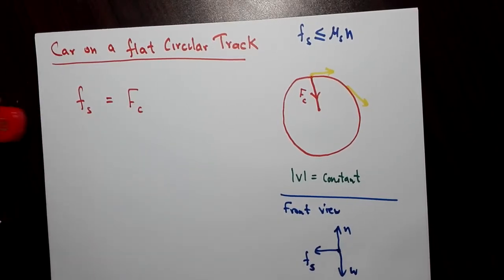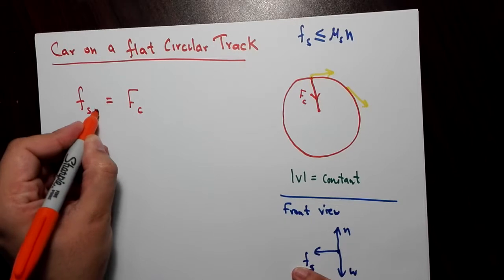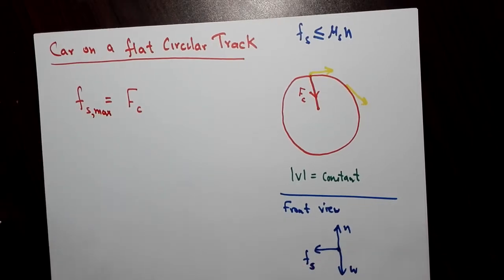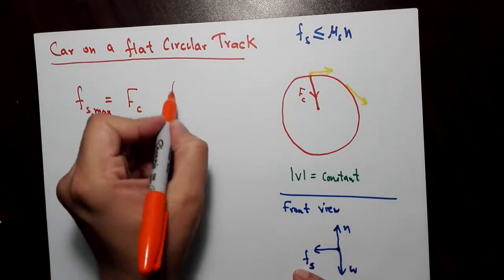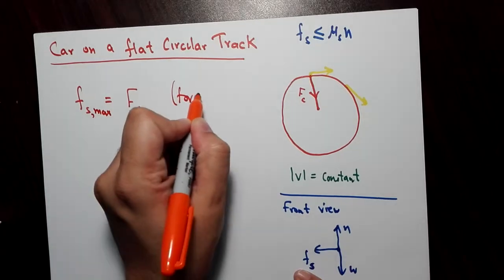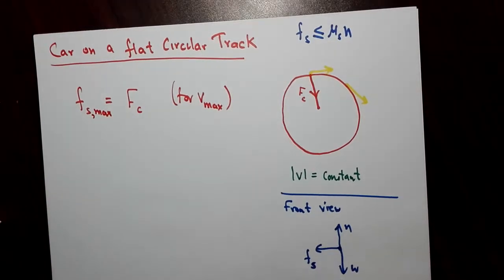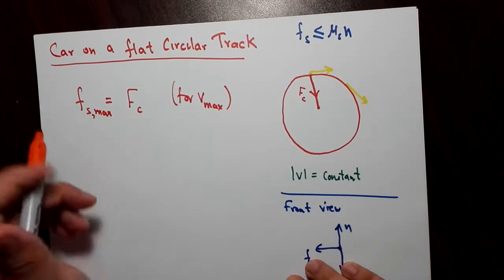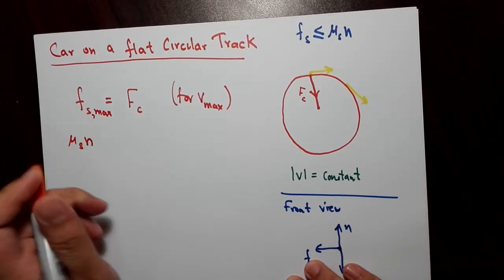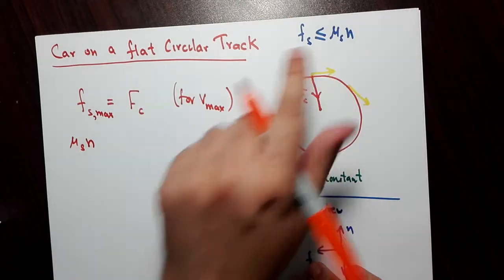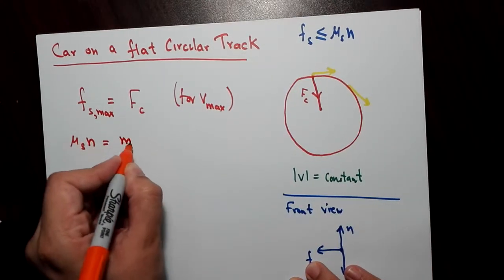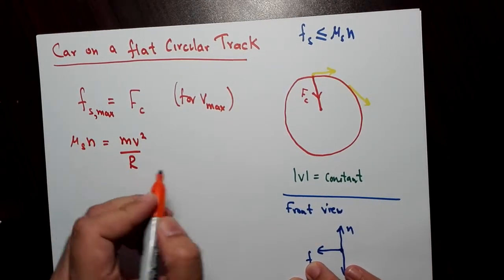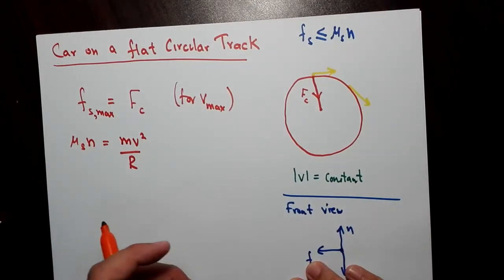So in order to find the limiting speed, we will take the static frictional force to be maximum, for Vmax. Now, the static frictional force is equal to μs times N, its maximum value is equal to μs times N. So you get μs times N equals Mv² over R. R is the radius of the track.